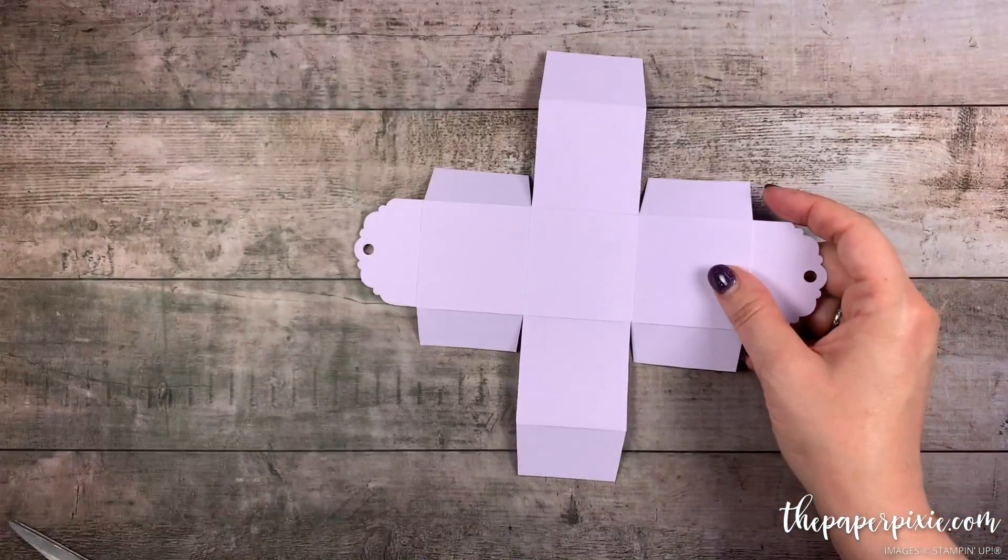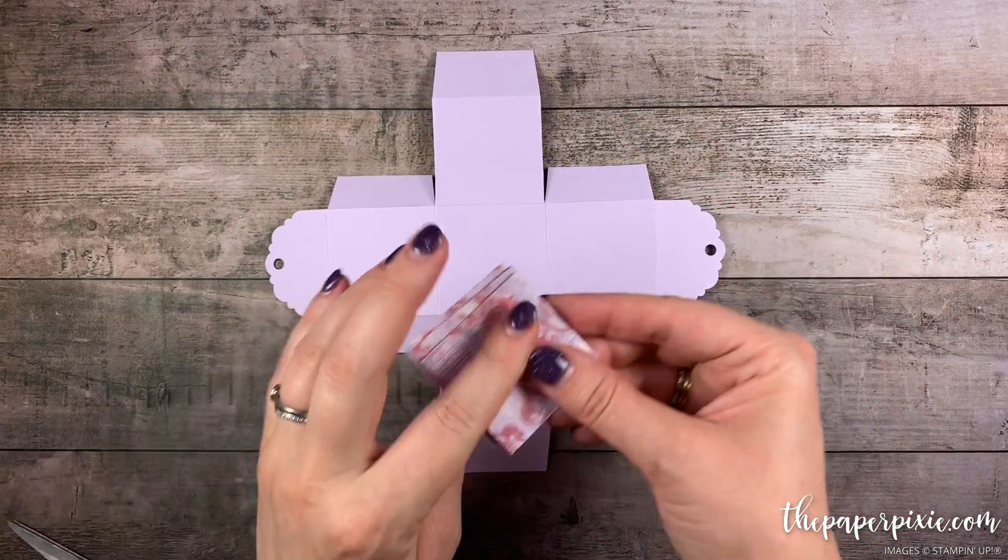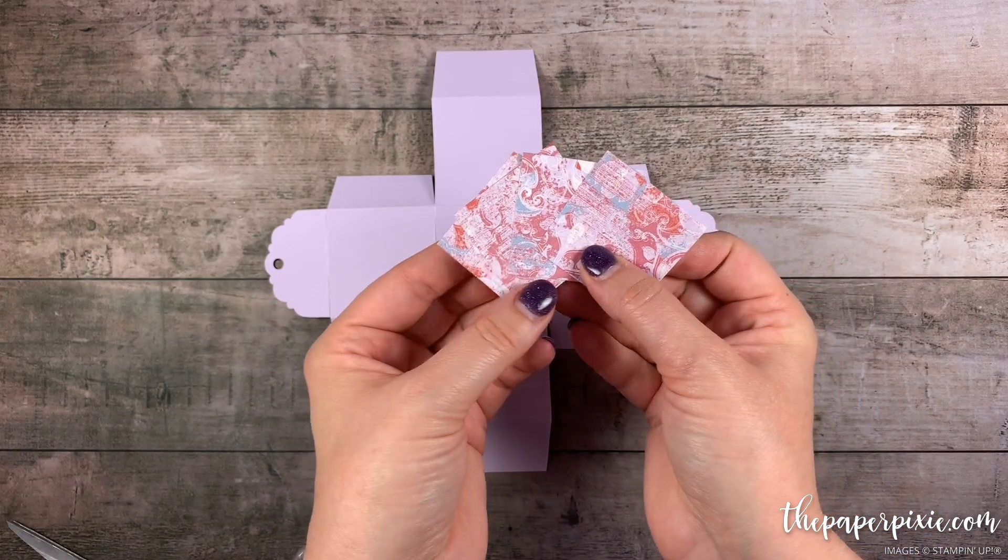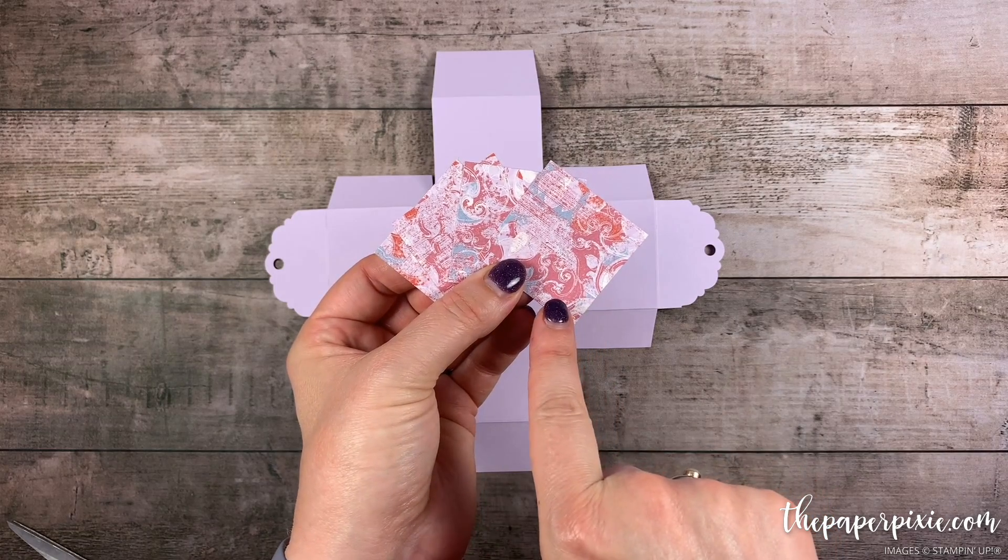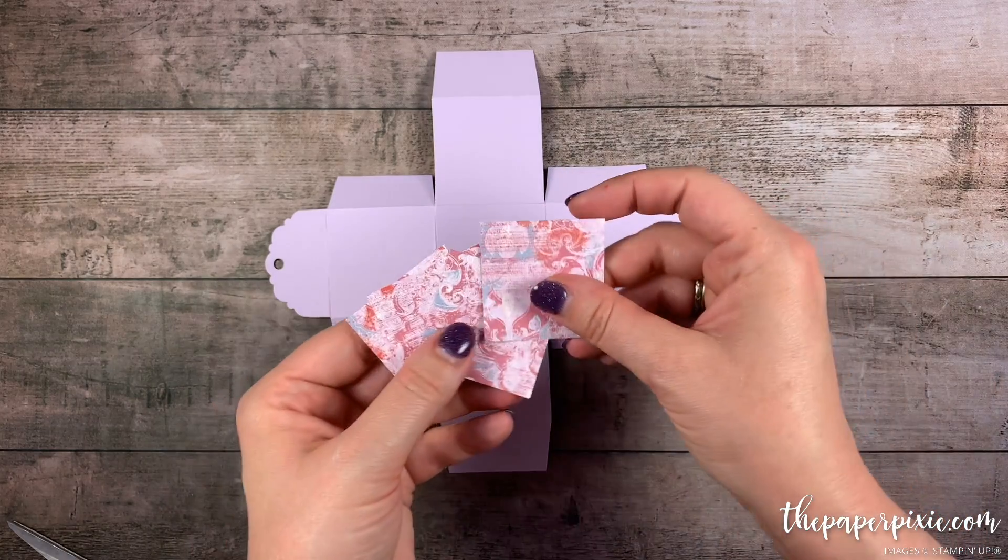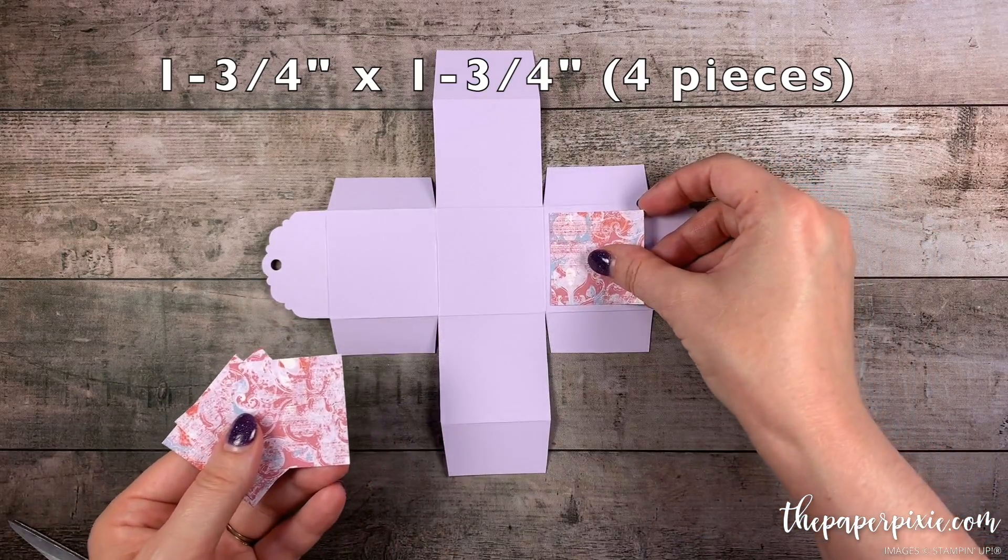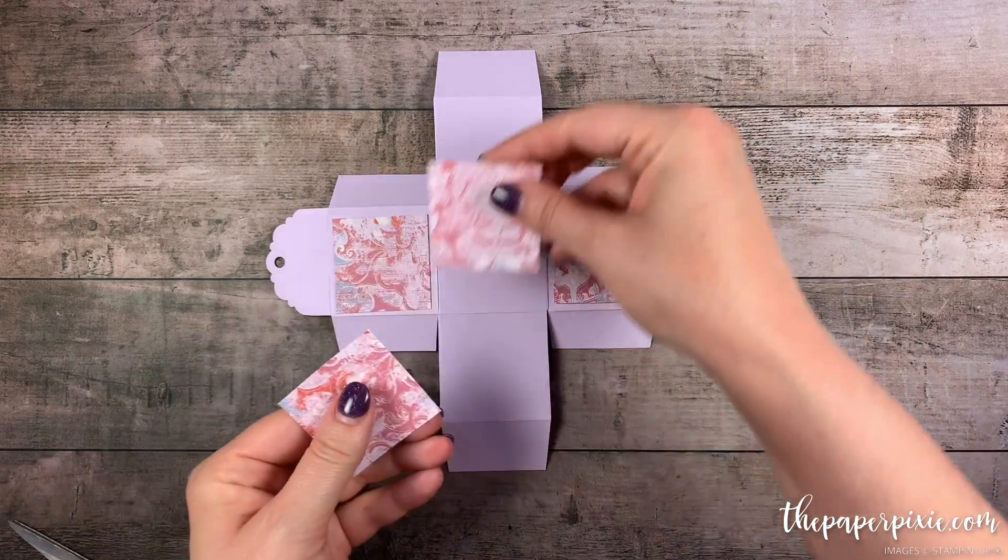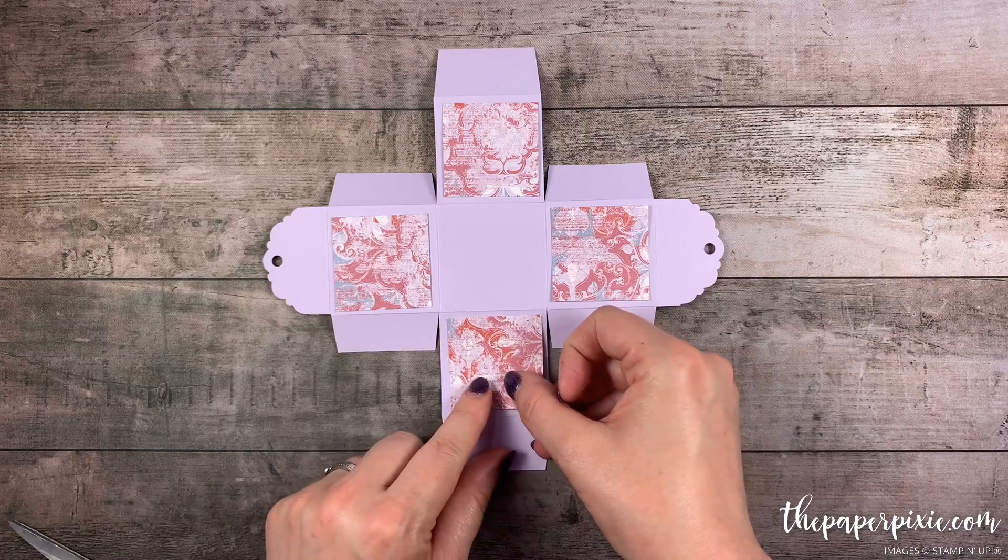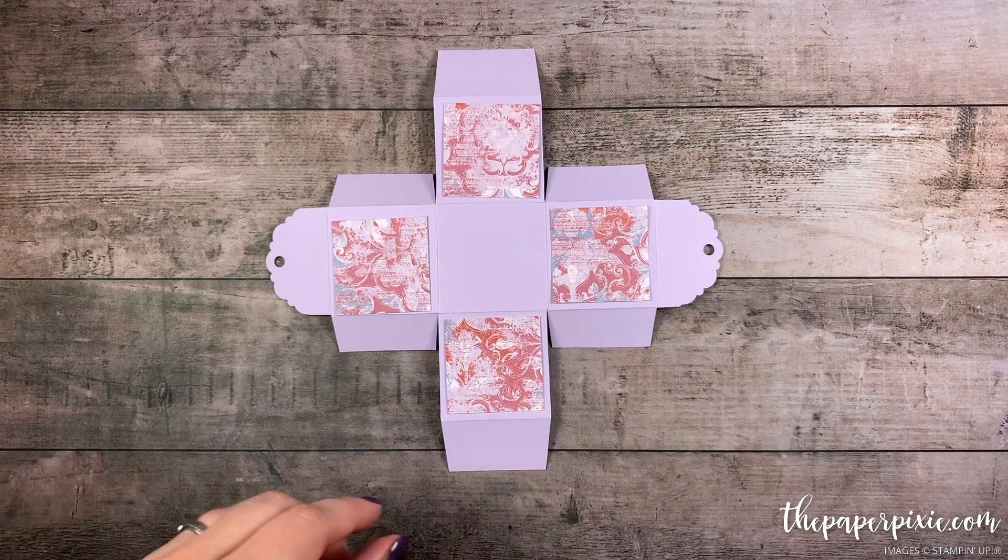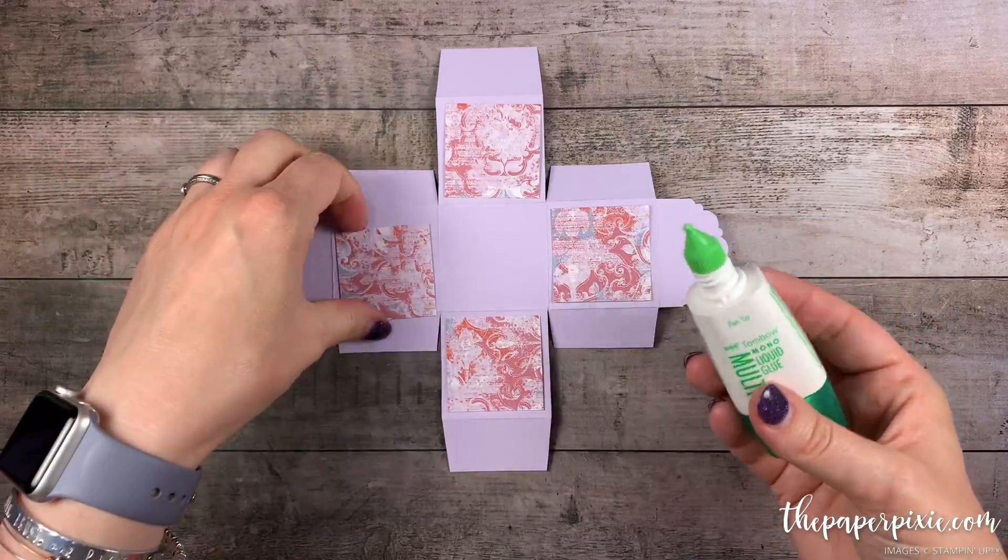So before we put the box together we're going to go ahead and adhere some designer series paper. This is the beautiful woven threads designer series paper that perfectly showcases all 5 of the new in colors. And these pieces measure 1 and 3 quarters by 1 and 3 quarters. And I'm just going to adhere those to these 4 outside squares. Not this one. This will be the bottom of the box. And then I'm just going to use liquid multi-purpose glue for that.